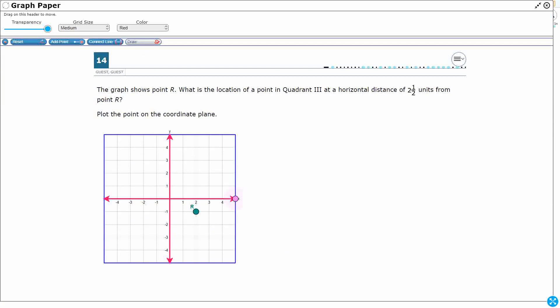So we've got a point here, and let's just go ahead and plot this. So we've got our x-coordinate. So our x-value is going to be 2, and our y-value is going to be negative 1. Okay, so that's point R is 2, negative 1. So what is the location of a point? So they give us a hint, quadrant 3, and then we need a horizontal distance of 2 1⁄2 units. Okay, so first off...